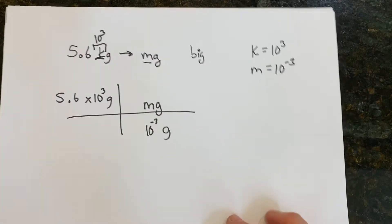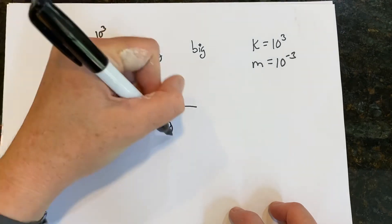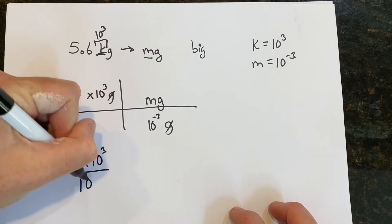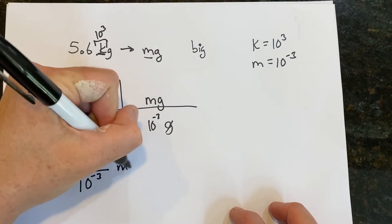Now when you go to calculate it out, you have 5.6. Our grams will cancel. 5.6 times 10 to the third divided by 10 to the negative third and our resulting unit is milligrams. Now we just have to go through and calculate this out.